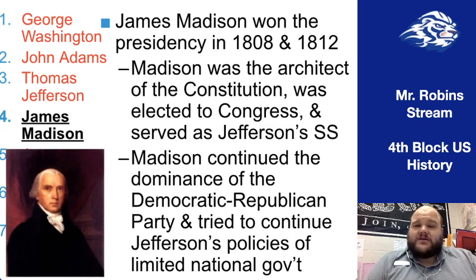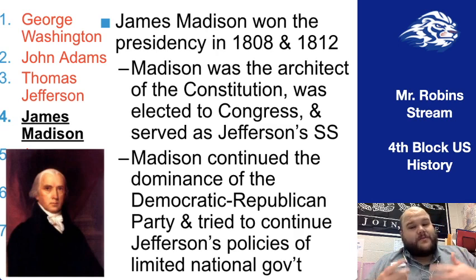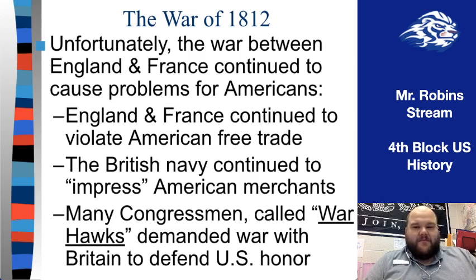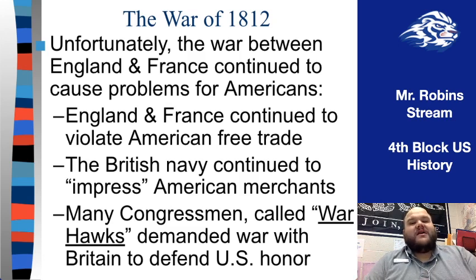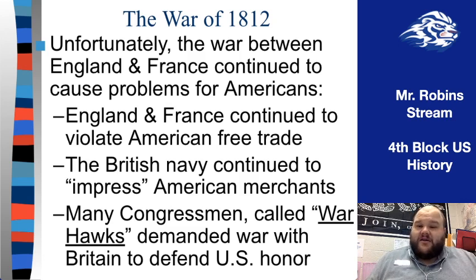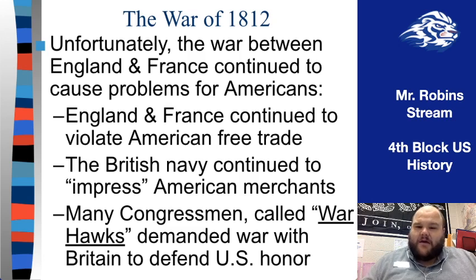Madison, like Jefferson, was a Democratic-Republican, and just like Jefferson he would try to continue a policy of limited government. But it wasn't going to be easy. The Embargo Act did not come close to stopping the issue between England and France — it was still ongoing and heating up as we get to 1812. By the end of Madison's first term, he was seeing a dual problem from both Britain and France violating American free trade.